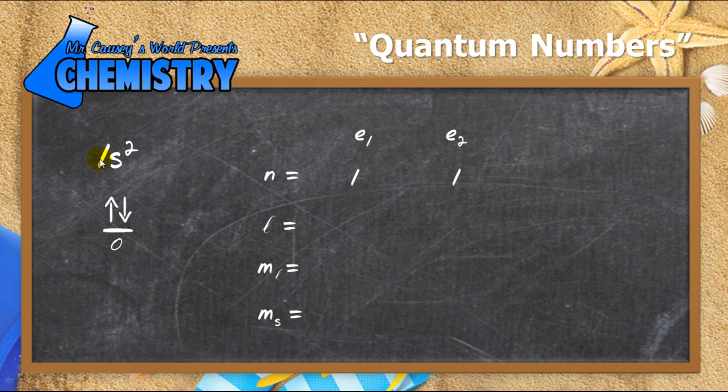If you look over here, we have one. And that's our energy level number. So n equals one for both of them. And then l, that's going to be which subshell. And, of course, s is zero. And then it only has one sub-level. So that's also going to be zero.